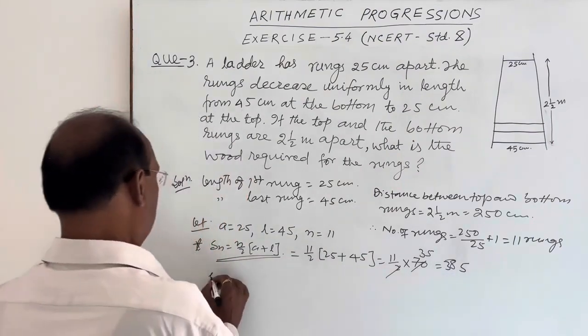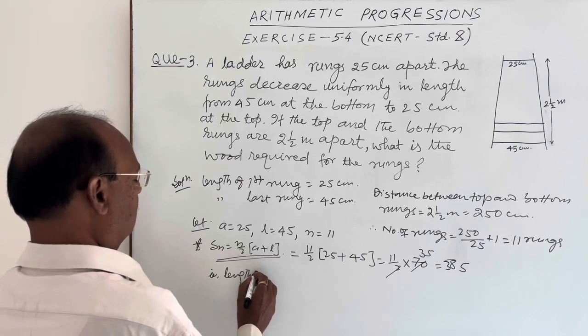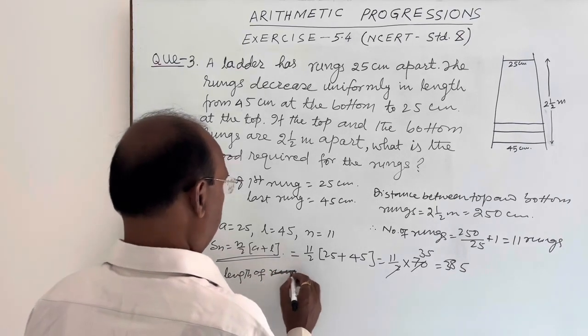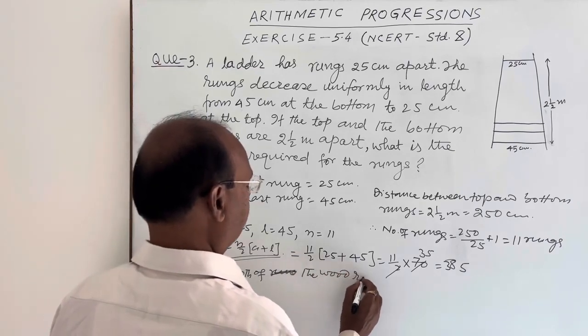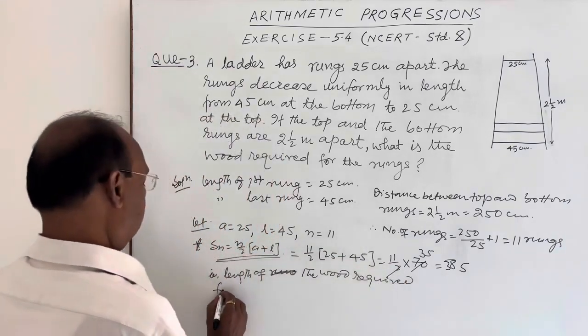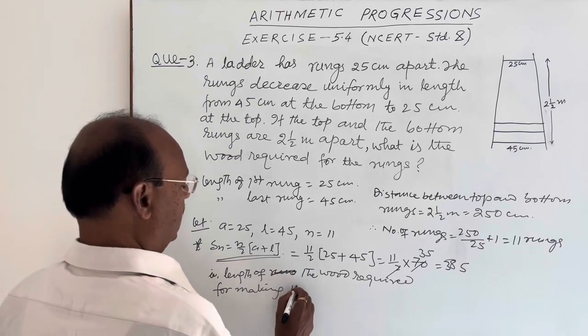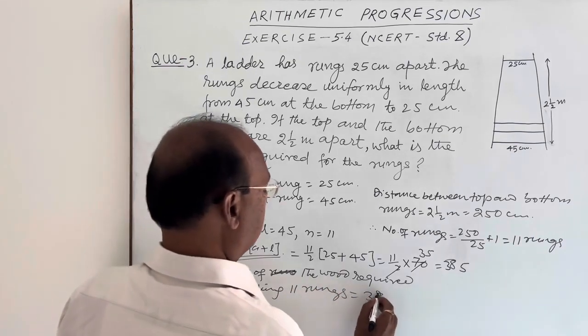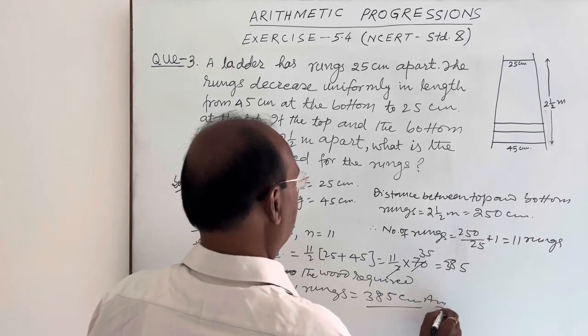It means that the length of the wood required for making all these rungs is equal to 385 cm. This is the answer.